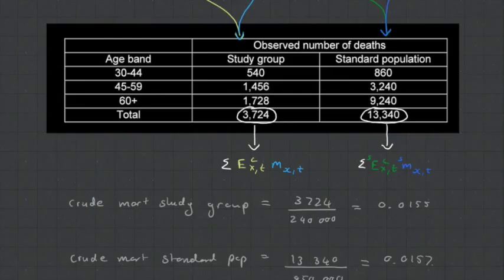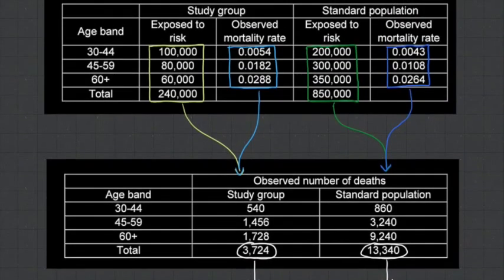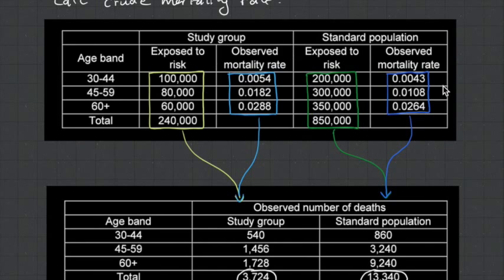We're going to use this example for the rest of the video. What we've got here are two populations. We've got the one called the study group, and another one called the standard population. This is the amount of people at each age, and this was the observed mortality rate. We multiply those together, and we can see the observed number of deaths. We can see that the light blue values are all greater than the values over here.